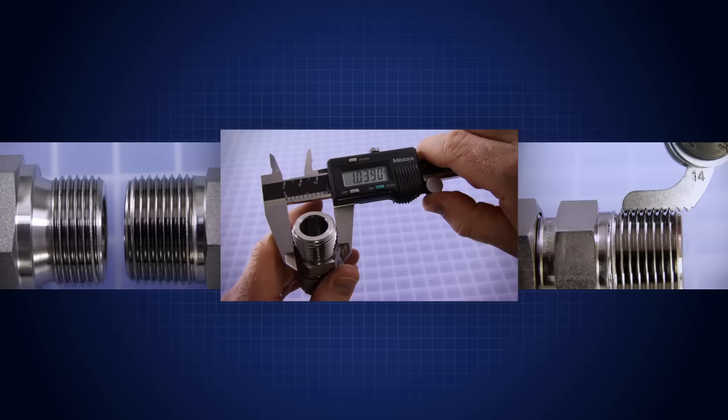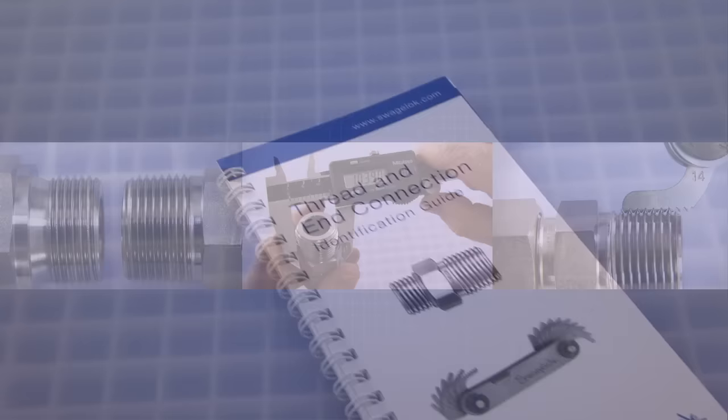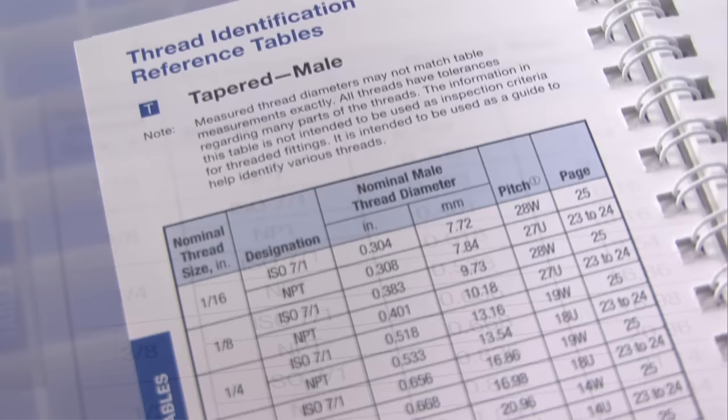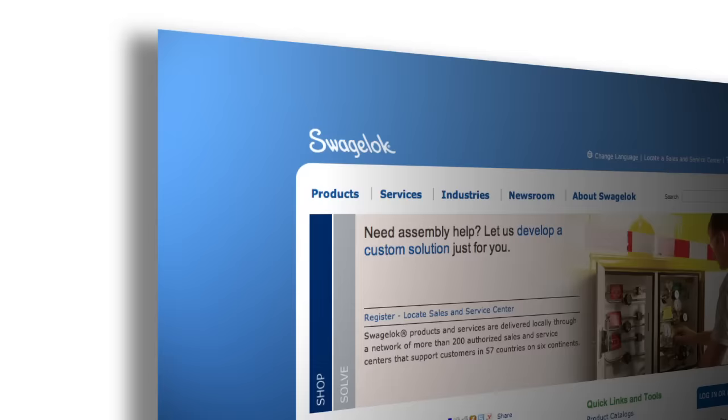The final step is to determine the thread standard. Take the information you have gathered—the thread category, the nominal diameter, and the thread pitch—and use a thread identification guide such as the Swagelok thread and end connection identification guide to identify the thread.